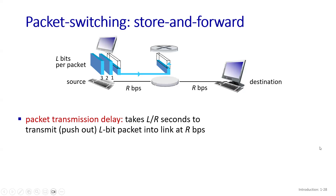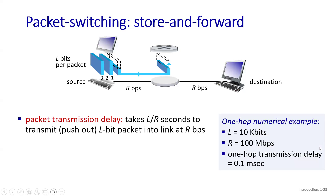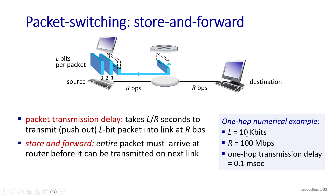Let's talk about packet switching. Normally, application data is divided into packets, and each packet has a certain number of bits. We consider packets of L bits, and the transmission rate is R bits per second, so the transmission delay the packet will face is L divided by R. For example, if the packet length is 10 megabits and the transmission rate is 100 megabits per second, then the transmission delay for one hop is 0.1 milliseconds.